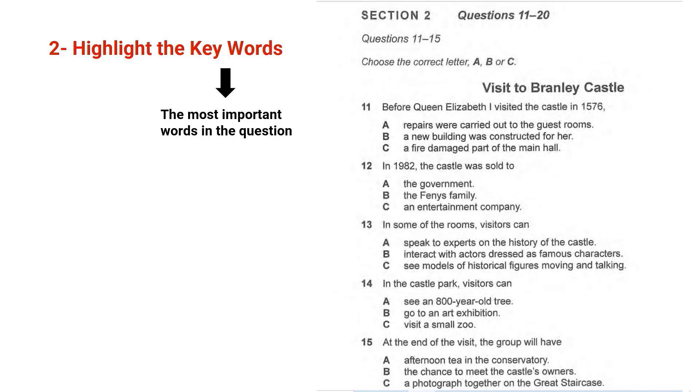This is section two. And as you can see, this is a multiple choice question. You have the question and you have long options. You need to go through the options very quickly and spot the keywords. So here we have, before Queen Elizabeth the First visited the castle in 1576, so the important words here are before the action and the visit. The options: repairs were carried out to the guest rooms, I choose repairs. A new building was constructed for her, new building. A fire damaged part of the main hall, a fire on the third option.